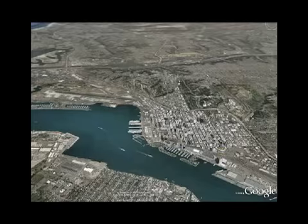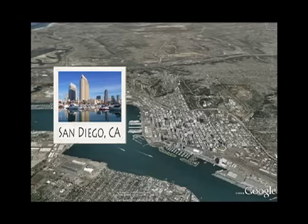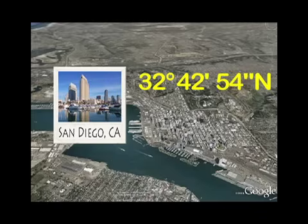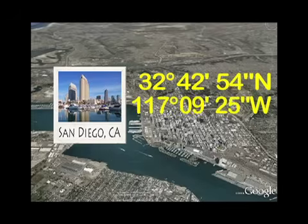Using latitude and longitude, the precise location of San Diego can be written as 32 degrees, 42 minutes, 54 seconds north latitude, and 117 degrees, 9 minutes, 25 seconds west longitude.